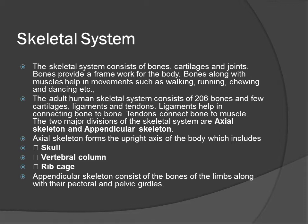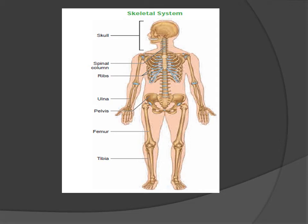The two major divisions of the skeletal system are axial skeleton and appendicular skeleton. Axial skeleton forms the upright axis of the body which includes skull, vertebral column, and rib cage. Appendicular skeleton consists of the bones of the limbs along with their girdles, including skull, spinal column, ribs, pelvis, femur, and tibia.